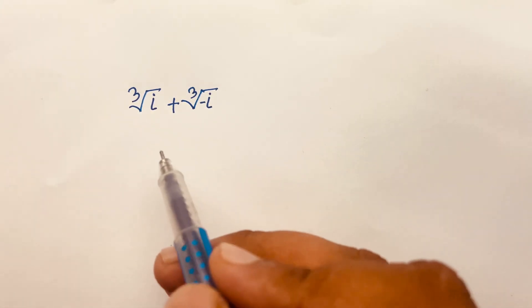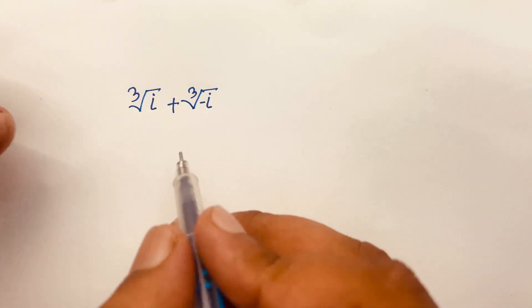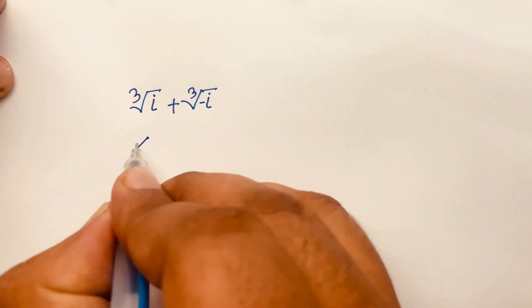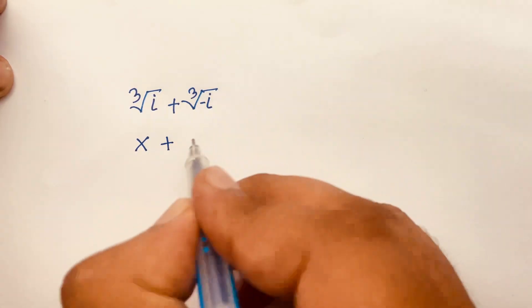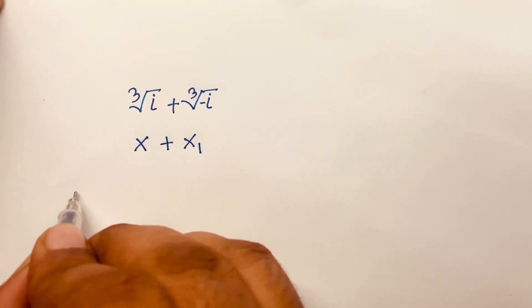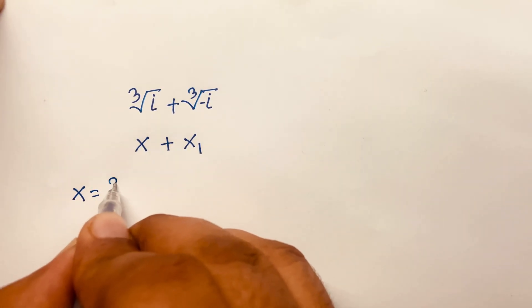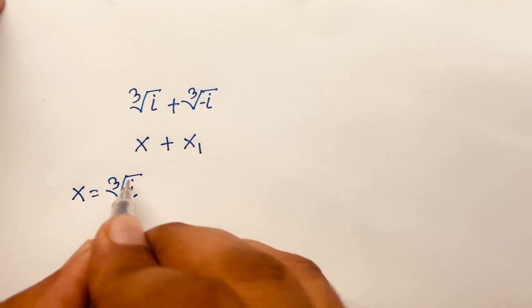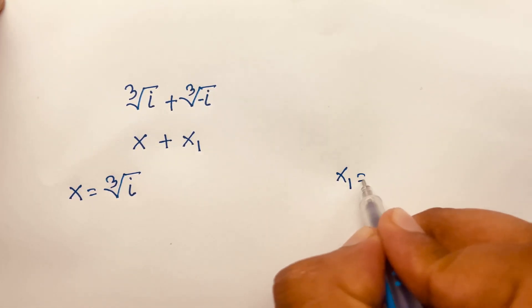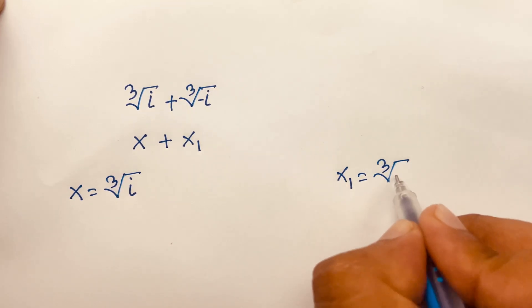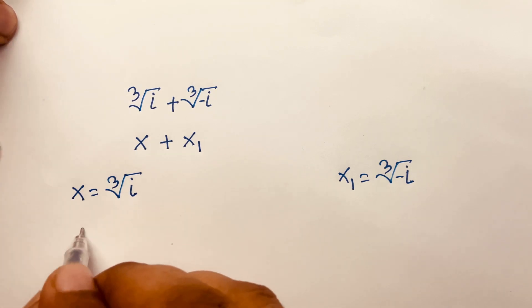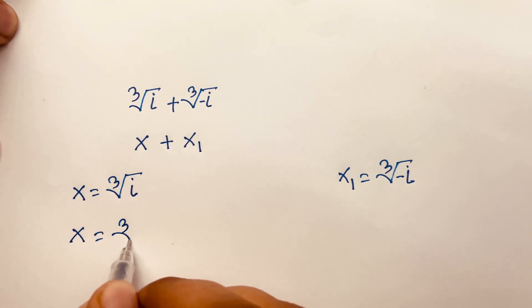How to solve cube root of i plus cube root of minus i. Let cube root of i be equal to x and cube root of minus i be equal to x1. So x equals cube root of i and x1 equals cube root of minus i.